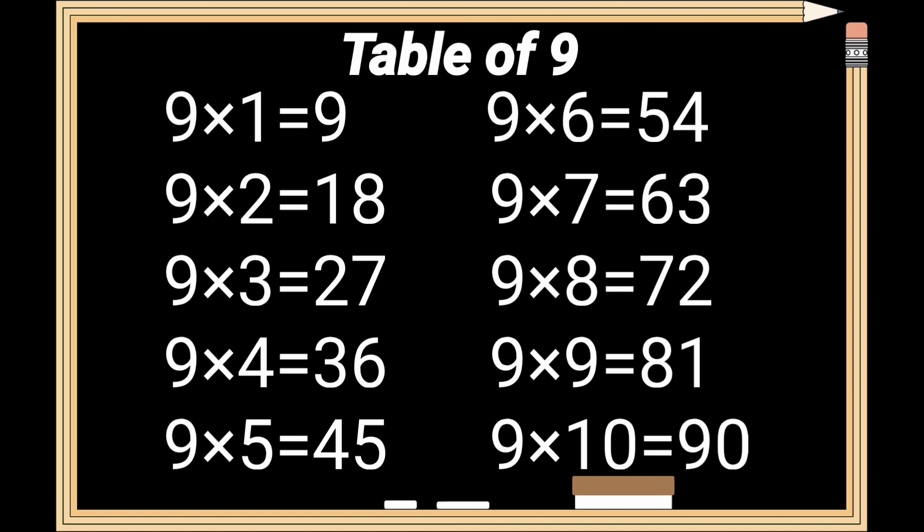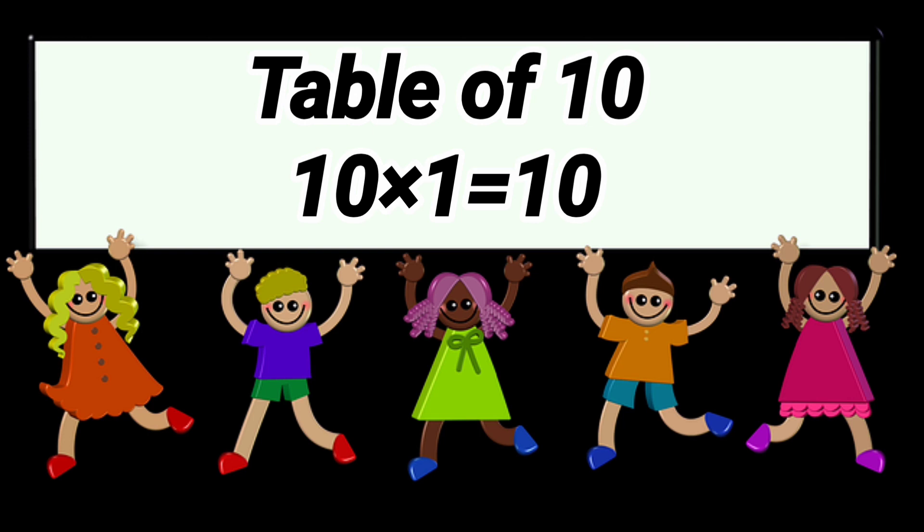Table of 9 review. 9 times 1 is 9. 9 times 2 is 18. 9 times 3 is 27. 9 times 4 is 36. 9 times 5 is 45. 9 times 6 is 54. 9 times 7 is 63. 9 times 8 is 72. 9 times 9 is 81. 9 times 10 is 90.